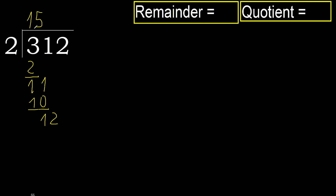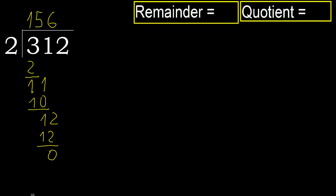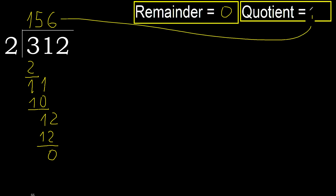2 multiplied by 6 is 12, which is not greater. Subtract: remainder is 0. There is no next number, so we finish. 312 divided by 2 is 156.